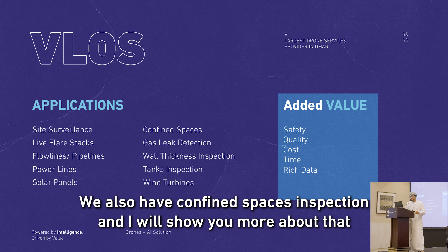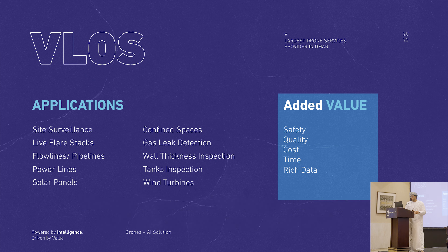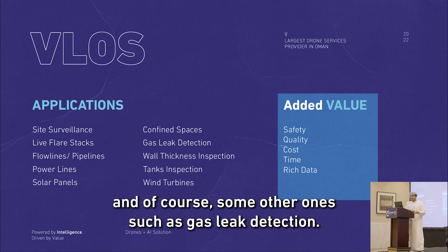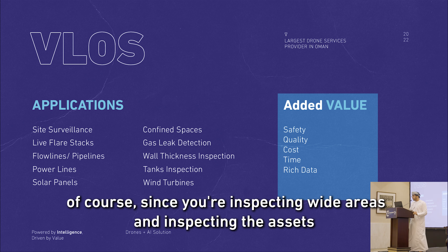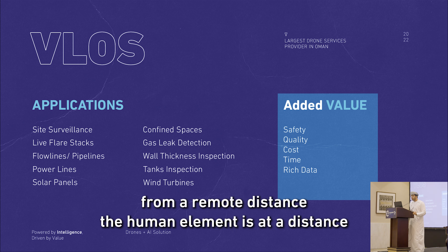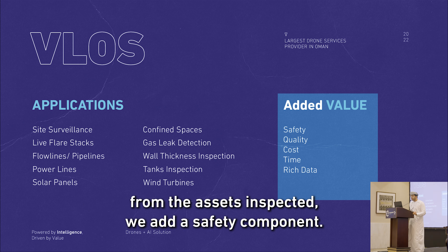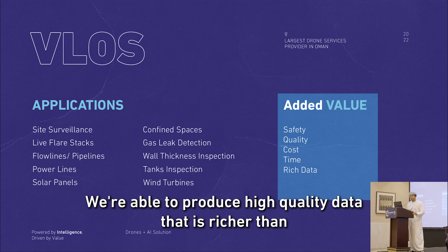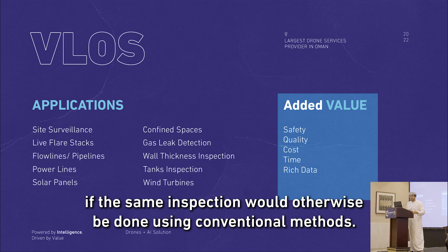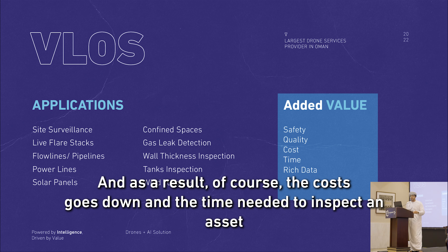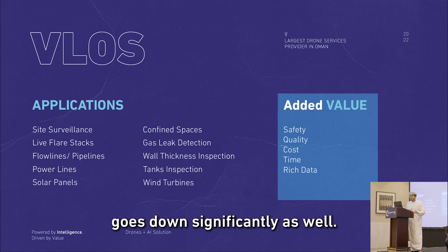We also have confined space inspection, and of course other applications such as gas leak detection. Talking about the added value: since you're inspecting blind areas or assets from a remote distance, the human element is kept at a safe distance. We add a safety component, we're able to produce high-quality data that is richer than conventional methods, and as a result, the cost and the time needed to inspect that asset go down significantly.